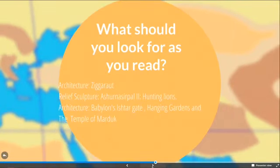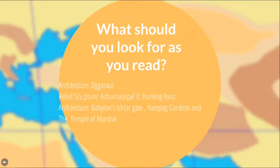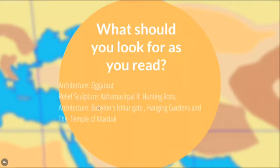As you go through this summary or read through the online school, look for these key words: ziggurat — that's a word you need to know. You need to know about relief sculpture, and we're going to talk about Ashurnasirpal II and his sculpture about hunting lions. We'll learn what relief sculpture is and discuss that specific work. For architecture, we will talk about Babylon's Ishtar Gate, the Hanging Gardens, and the Temple of Marduk. That's pretty much what we're going to focus on, so look out for those words and your vocabulary words.